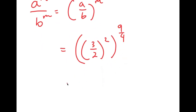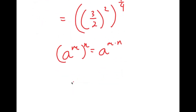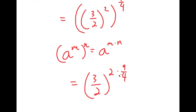If I have something in the form (a to the power of m) to the power of n, this is equal to a to the power of m times n. So it's going to equal (3 over 2) to the power of 2 times 9/4.